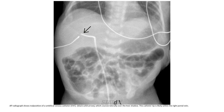AP radiograph showing malposition of the umbilical venous catheter coursing laterally over the liver's shadow. The catheter tip is slightly within the right portal vein.